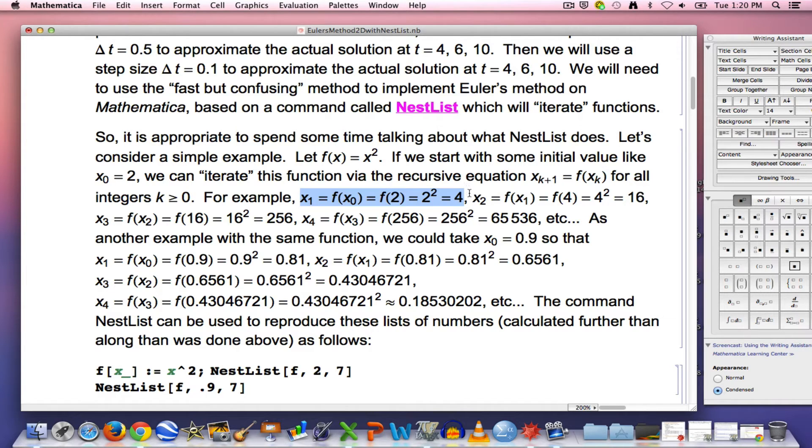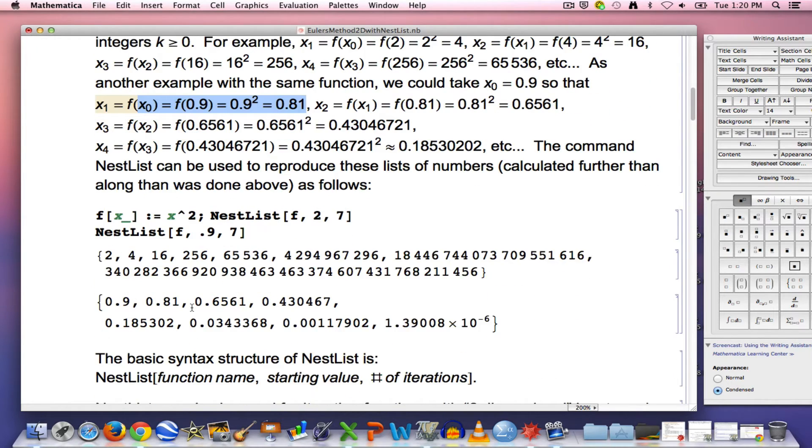x1 is 2 squared, which is 4, x2 is 4 squared, which is 16, x3 is 16 squared, which is 256, etc. I could use a different initial condition like 0.9 and get different numbers. Nest list will implement this.